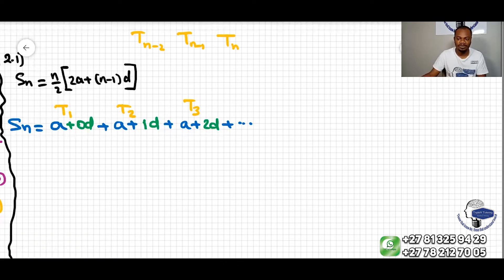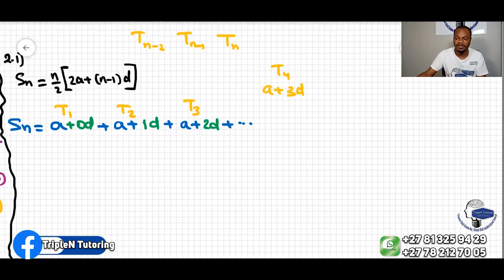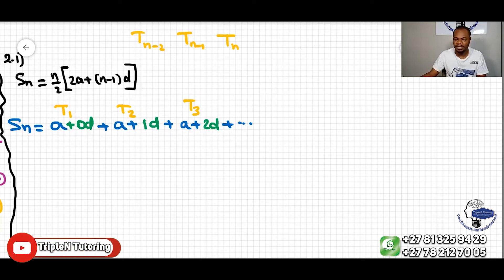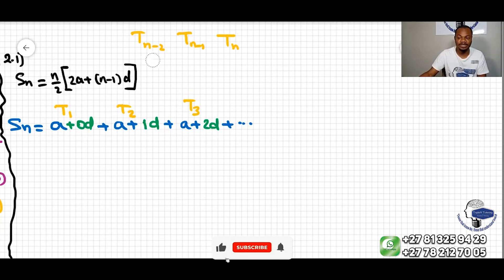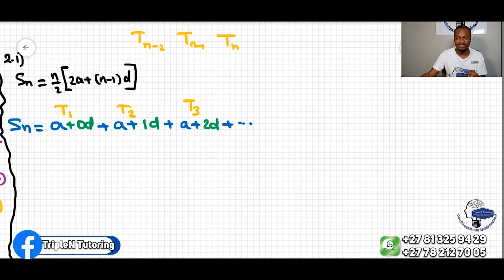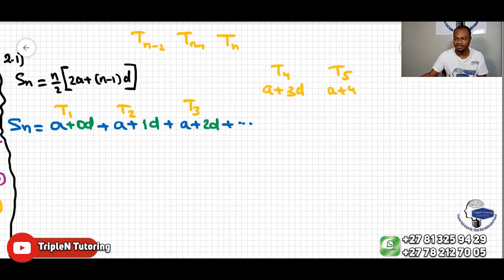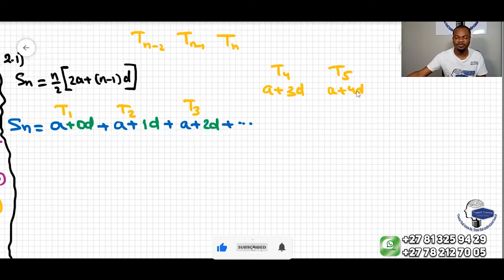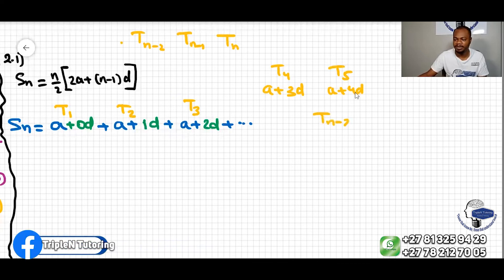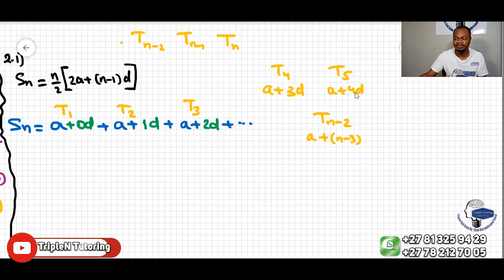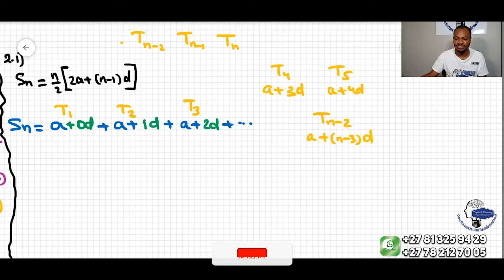If I wanted to find t4, it would be a plus 3d. If I wanted to find t5, it would be a plus 4d. Always 1 less. So for tn minus 2, the coefficient of d must be n minus 3 — meaning tn minus 2 equals a plus n minus 3 times d, because it's 1 unit less than the index.